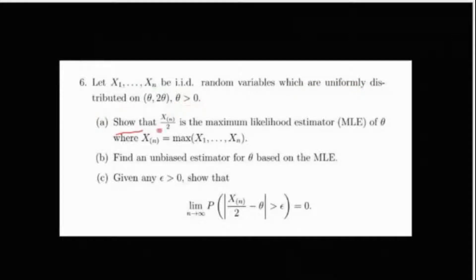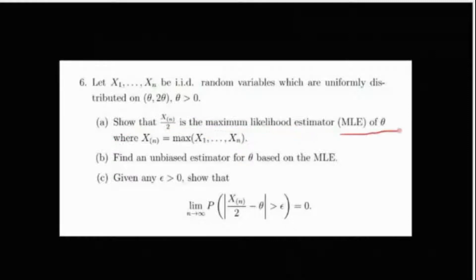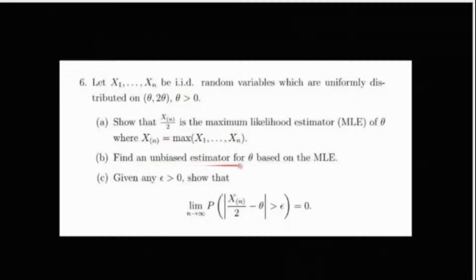Show that X_(n)/2 is the MLE — that is, the maximum likelihood estimator of θ — where X_(n) is the maximum of X1 through Xn. Second, find an unbiased estimator for θ based on the MLE. And lastly, given any ε > 0, show that the limit as n tends to infinity of P(|X_(n)/2 − θ| > ε) = 0.